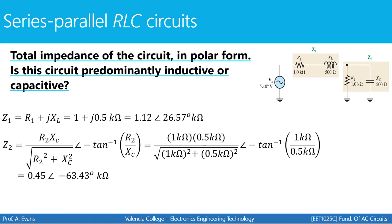Next, we calculate Z2, which is the resistor in parallel with the capacitor. We use the formula for a resistor in parallel with a capacitor. Once you plug in the values for R2 and XC, you'll see that Z2 equals 0.45 kilohms at an angle of negative 63.43 degrees. We also convert that to rectangular form — thinking ahead, since Z1 and Z2 are in series with one another, we'll eventually need to add them together, which requires rectangular form.